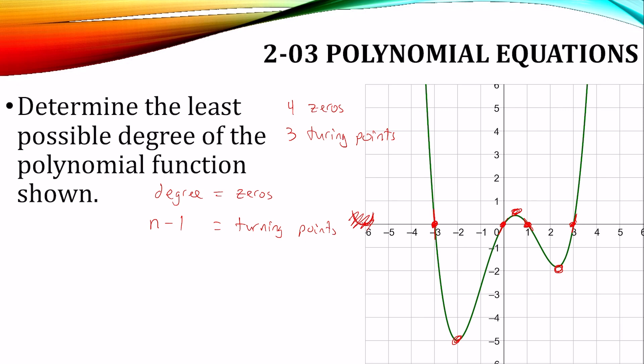So it looks like our degree is going to be 4 because of the four zeros. And we have one less turning point than the degree. So if our degree is 4, we get the three turning points that we have. Therefore, our degree must be 4.